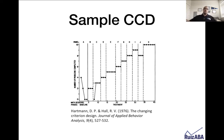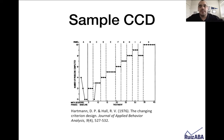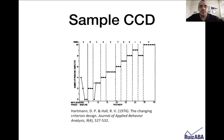Going back to eight is an example of the bidirectional change. The behavior comes under the control of the treatment, and the treatment can get the behavior to any level it needs to reach. Then they went right to ten, moving back up again. This is a pretty strong design. If I need to be convinced that the treatment impacted the behavior, looking at the level across phases and how quickly the behavior met the criteria in each phase, I feel very confident that the intervention was what caused this behavior change.